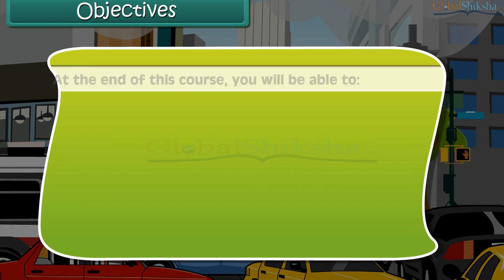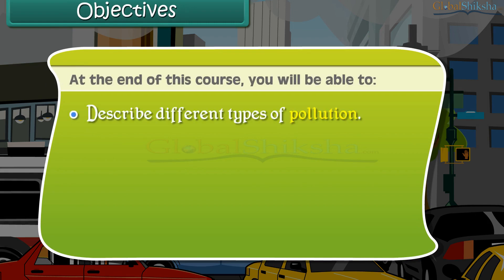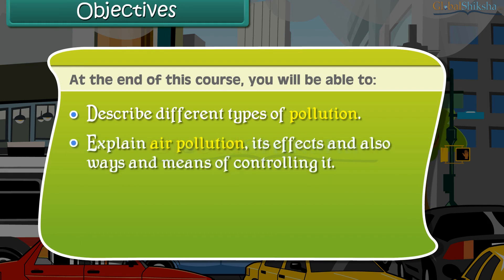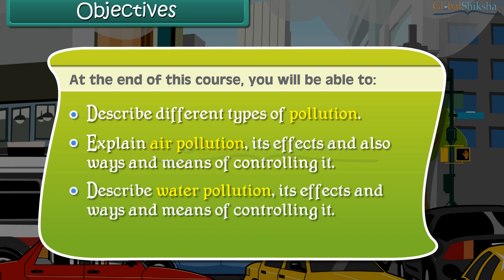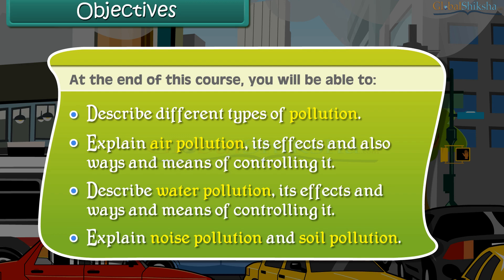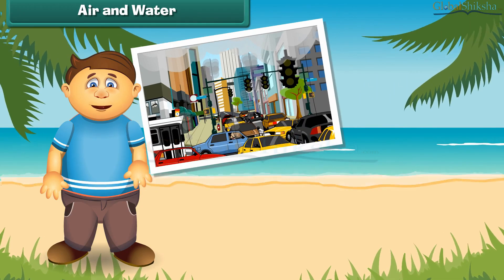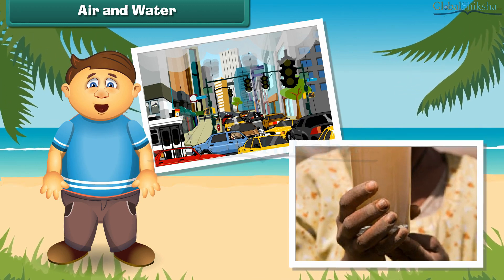At the end of this course, you will be able to describe different types of pollution, explain air pollution, its effects, and ways and means of controlling it, describe water pollution, its effects and ways and means of controlling it, and explain noise pollution and soil pollution.